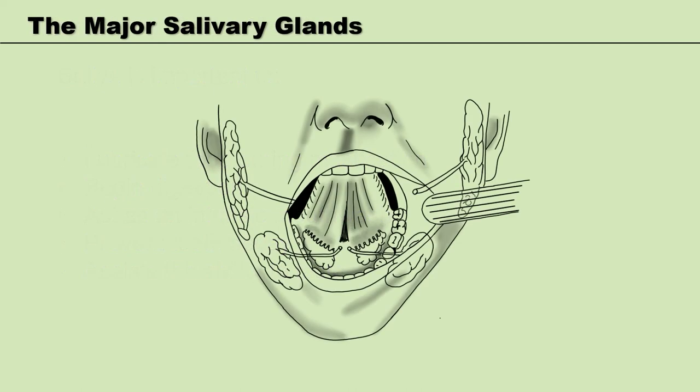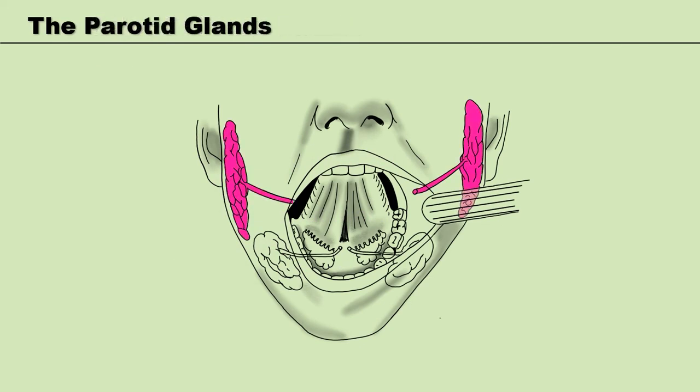There are three salivary glands on each side of the head. The parotid is located just in front of the ear, wrapped around the posterior border of the ramus of the mandible. It has a single duct that runs superficial to the masseter before turning medially to pierce the buccinator, the muscle of the cheek, and opens into the vestibule of the mouth opposite the crown of the upper second molar.